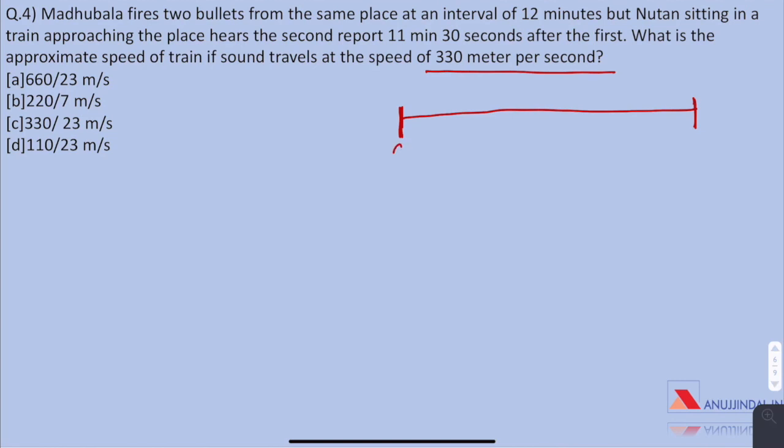Let us assume the point at which gunshots were fired is G and this point where the train was initially when Newton heard the first gunshot is A and B is the point where Newton hears the second gunshot. This takes 12 minutes as the first gunshot is heard after 12 minutes and the second gunshot is heard after 11.5 minutes here.